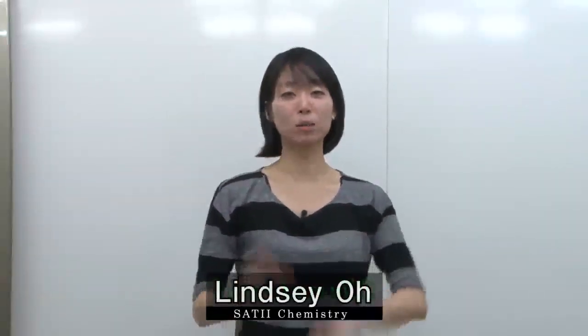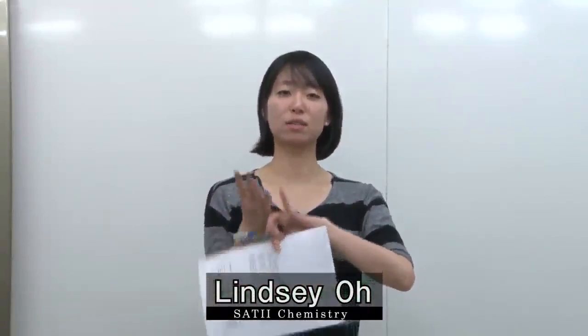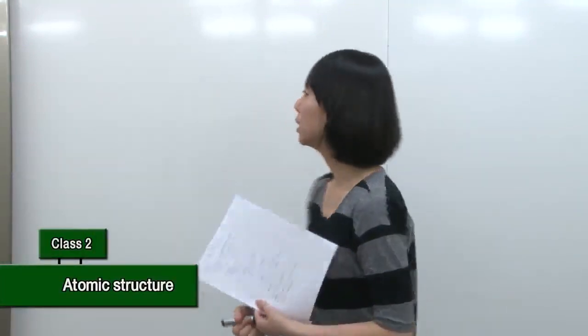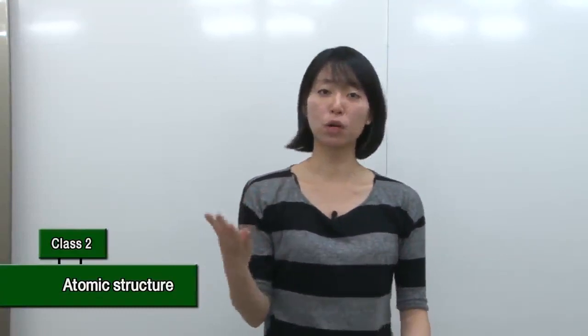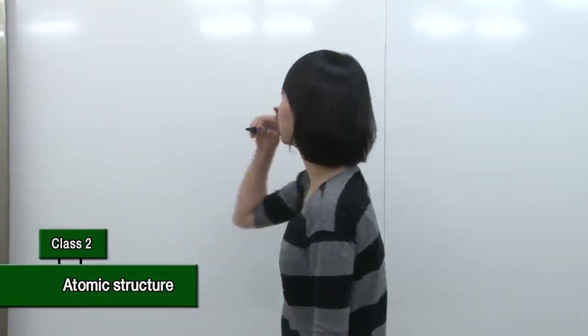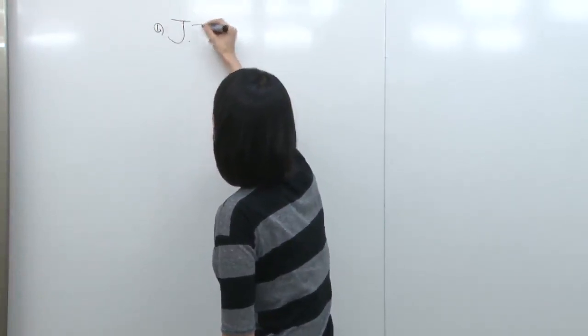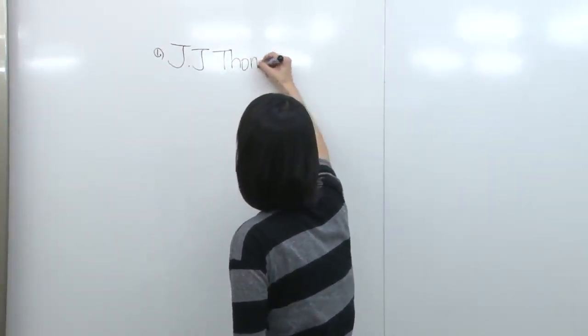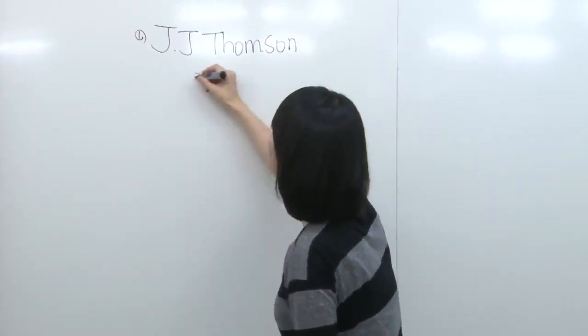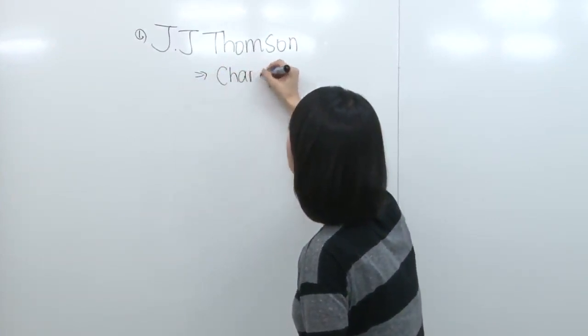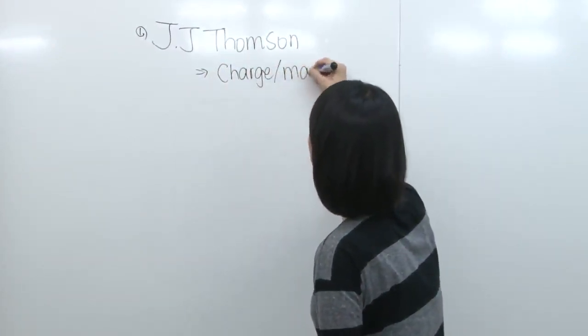So last class we talked about the atomic structure — the particles in the atoms and a few scientists who led to the discovery of the particles and atomic structure. We were up to number four. To briefly review: number one was J.J. Thompson with the cathode ray experiment. He found out the charge per mass of electrons.